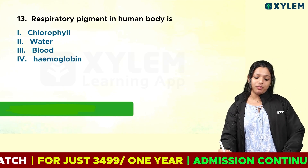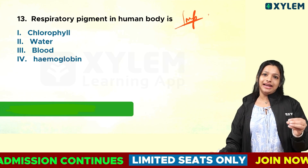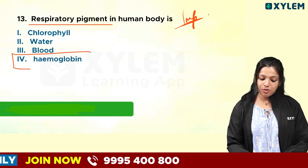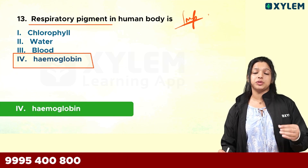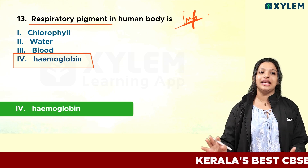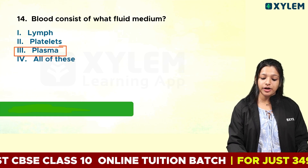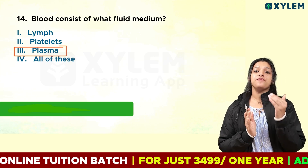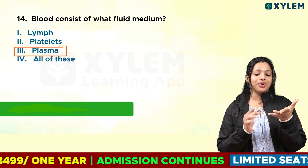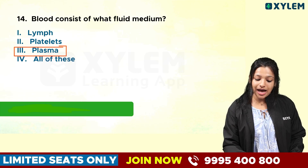The respiratory pigment in our blood is hemoglobin. In our body, the respiratory pigment is hemoglobin. Next question: blood consists of what fluid medium? The options are lymph, platelets, plasma, or all of these. Blood consists of RBC, WBC, platelets, etc. The fluid medium of blood cells is called plasma.